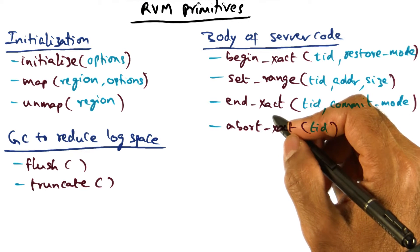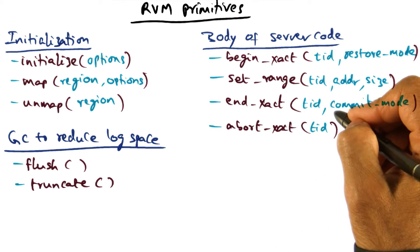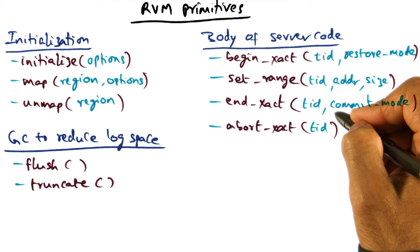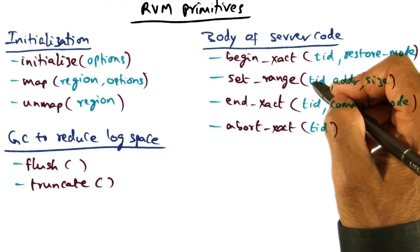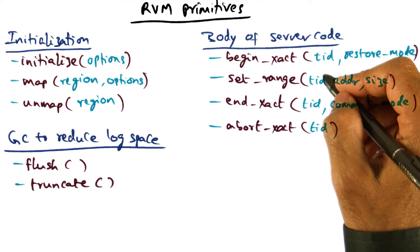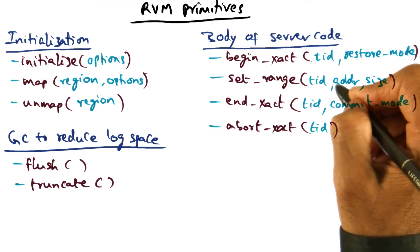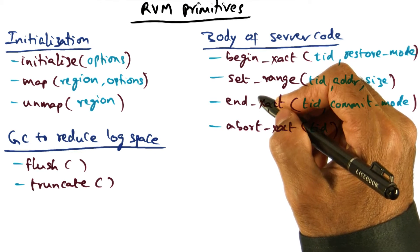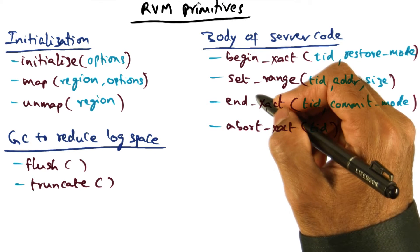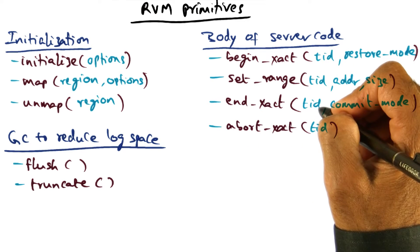The log segment is an in-memory data structure of the RVM runtime. Once a transaction commits, the log segment that contains the changes made to the in-memory version of persistent data structures will be committed to the disk. In other words, RVM writes the changes the developer makes to persistent data structures in between begin and end transaction as redo logs in the log segment, and these redo logs are committed to the disk at the point of end transaction.